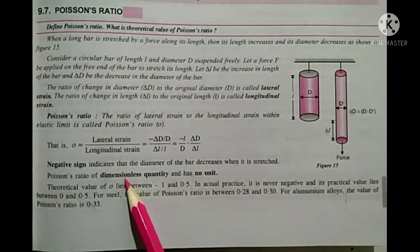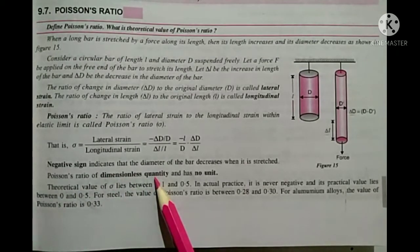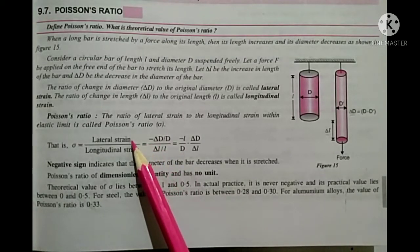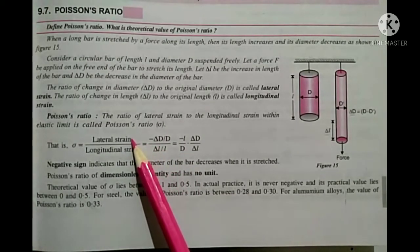Poisson's ratio is a dimensionless quantity and has no unit, because this is the ratio of the same physical quality.